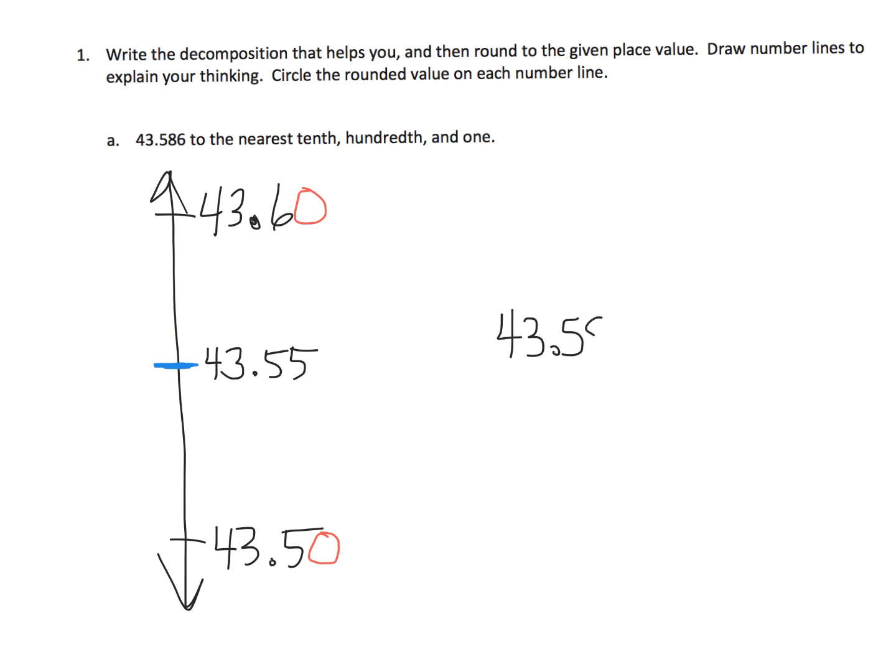And so 43.586, all right. So the idea would be where does this number live on our number line? Does it live down here or does it live somewhere up here?